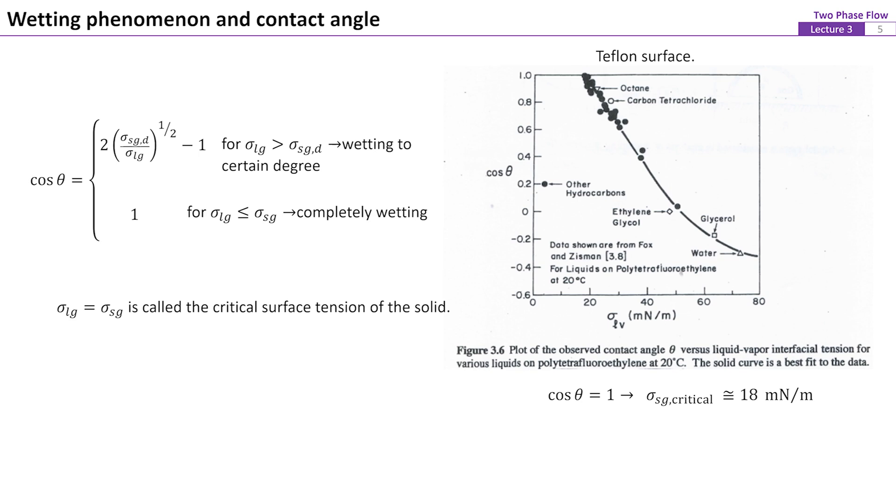For example, from this figure, the critical surface tension of Teflon is around 18 mN per meter.